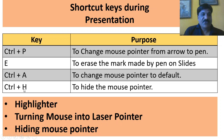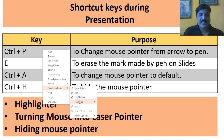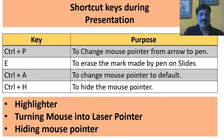Before viewing Ctrl+H, first of all we will discuss how to highlight a point. Simply right-click, then pointer, then select highlighter, and now you can highlight any points. In order to remove this mark, you can simply press E.